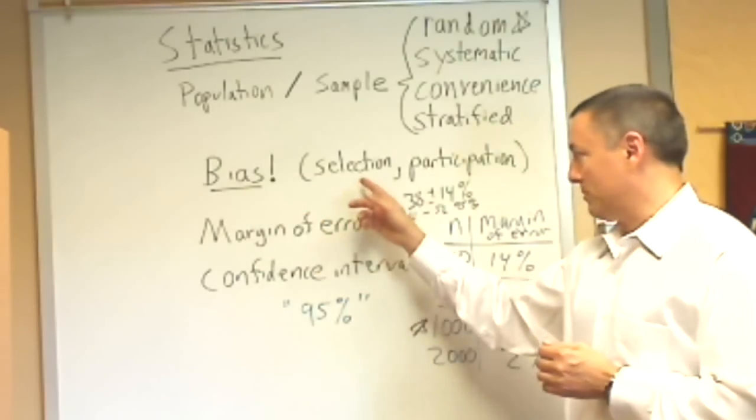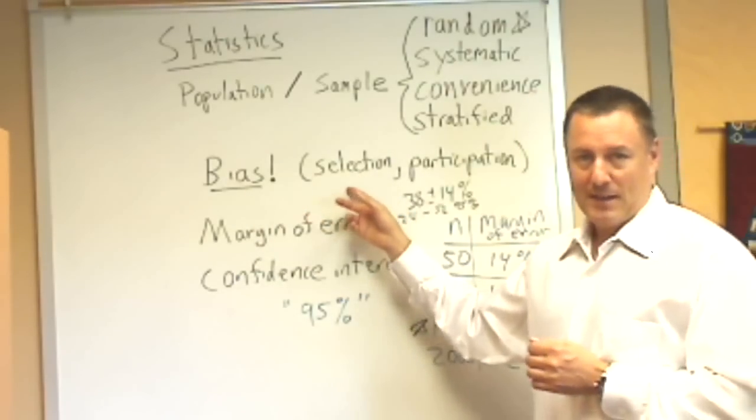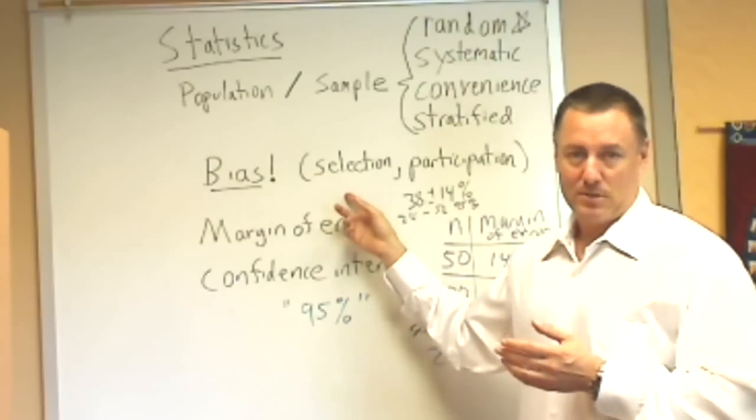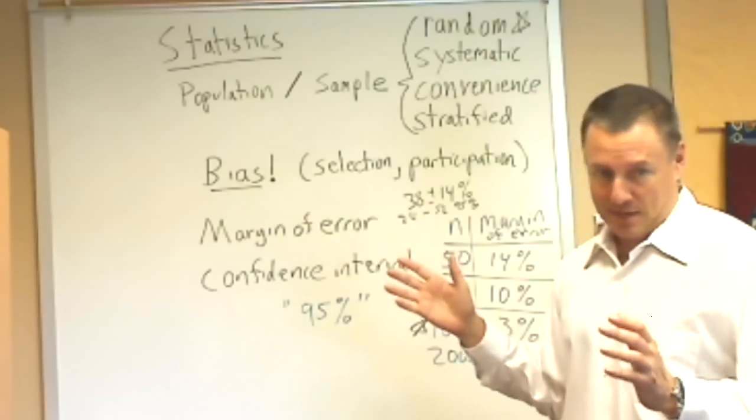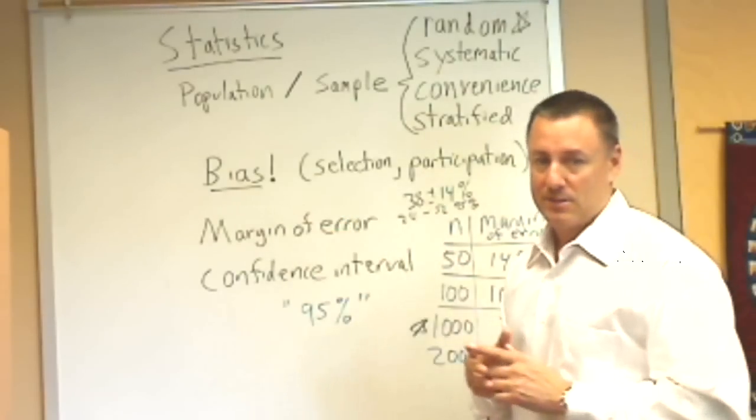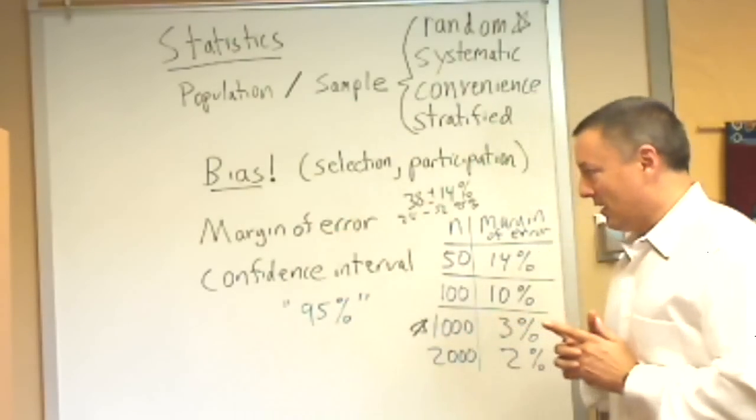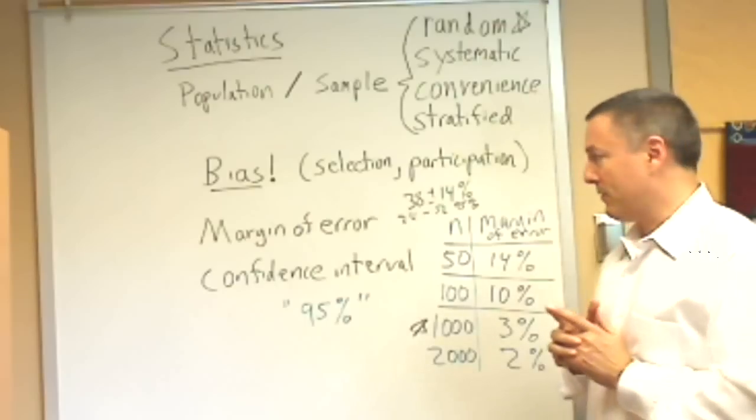We're always looking out for biases. In the next video I'm going to go over some historical surveys that had tremendous biases in their results. They were large surveys, so they should have been good, but in a sense the numbers didn't help them because they were biased. They were flawed in their design.